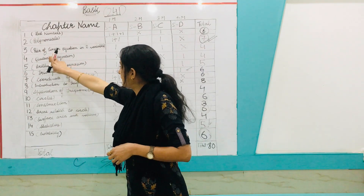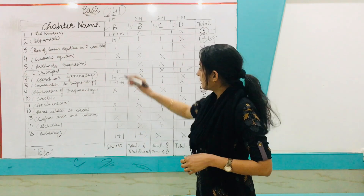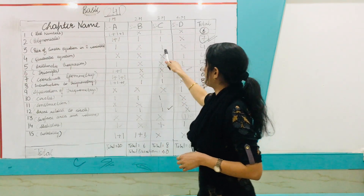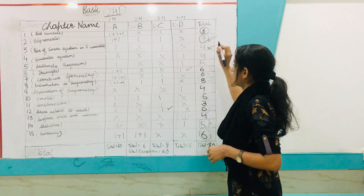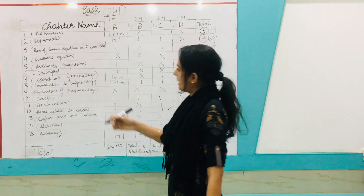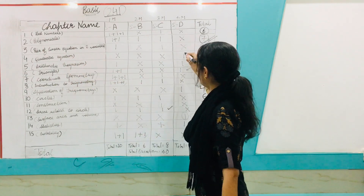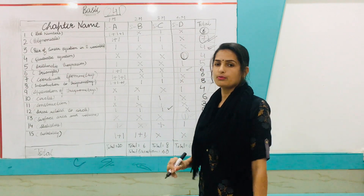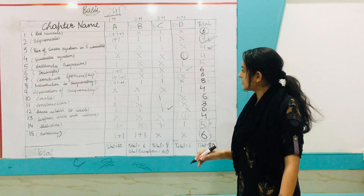Chapter 3, Pair of Linear Equations in Two Variables — there will be one question of one mark and one question of three marks, totaling four marks. Chapter 4, Quadratic Equations — there will be only one question of four marks. Prepare this chapter accordingly.